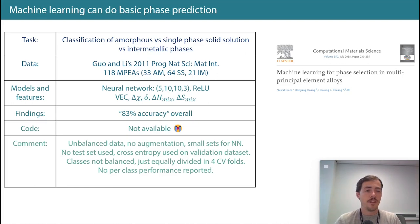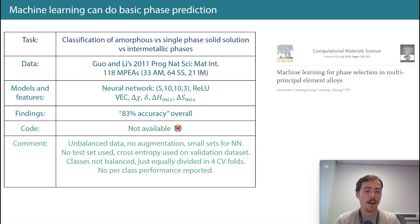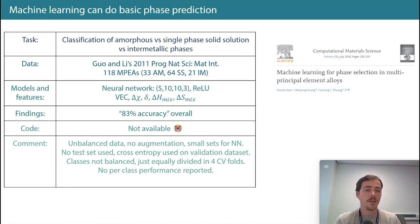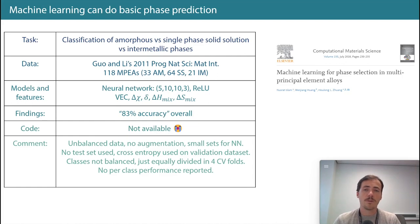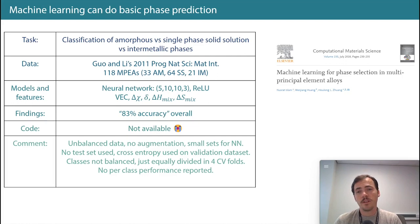What models and features did they use? They modeled this with a neural network with an input of five dimensions, an output of three — because you're classifying into one of three categories — two hidden layers with 10 nodes each, and a ReLU activation function. The features they used included valence electron count and the difference in electronegativity.